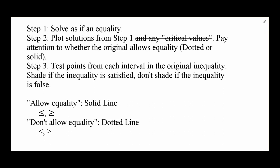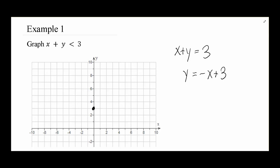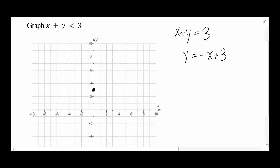Our first example is to graph x plus y less than 3. Step one: pretend it's an equation, x plus y equals 3. Solving for y gives y equals negative x plus 3 — y-intercept at 3, slope of negative 1. Since the original inequality did not allow equality, we're going to draw a dotted line, going down 1 over 1 repeatedly.